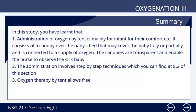Summary of study session 8: Administration of oxygen by tent is mainly for infants for their comfort. It consists of a canopy over the baby's bed that may cover the baby fully or partially and is connected to a supply of oxygen. The canopies are transparent and enable the nurse to observe the sick baby. The administration involves step-by-step techniques which can be found at section 8.2. Thank you, we've come to the end of this study session.